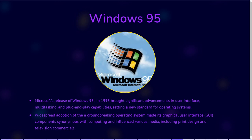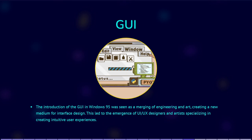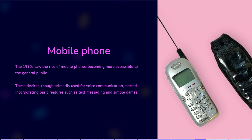Windows 95 became widely adopted and set the standard for future Windows releases. Not only had components of the GUI become synonymous with computing, but its images had found their way into other media, including print design and television commercials. It was even argued that, with the advent of the GUI, graphical user interface engineering had merged with art to create a new medium of the interface. The 1990s also saw the rise of mobile phones becoming more accessible to the general public. These devices, though primarily used for voice communication, started incorporating basic features such as text messaging and simple games.